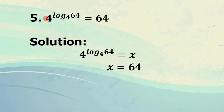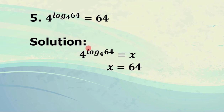For number 5, we have 4 raised to log of 64 to the base 4, which obviously equals 64. We copy the expression: 4 raised to log of 64 to the base 4 equals x. The base-4 exponential and the log base 4 are inverse functions, so the log of 64 to the base 4 in the exponent cancels out, and 64 comes down — x equals 64.